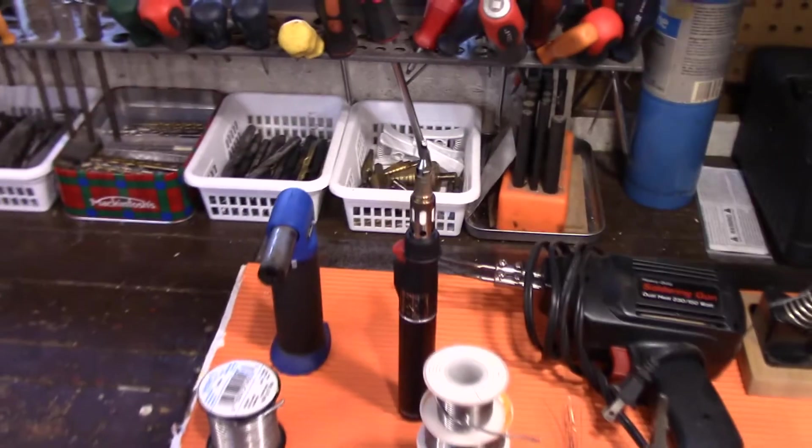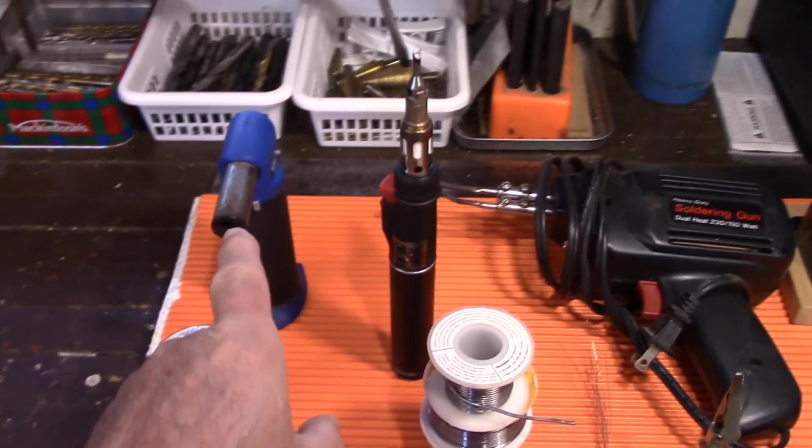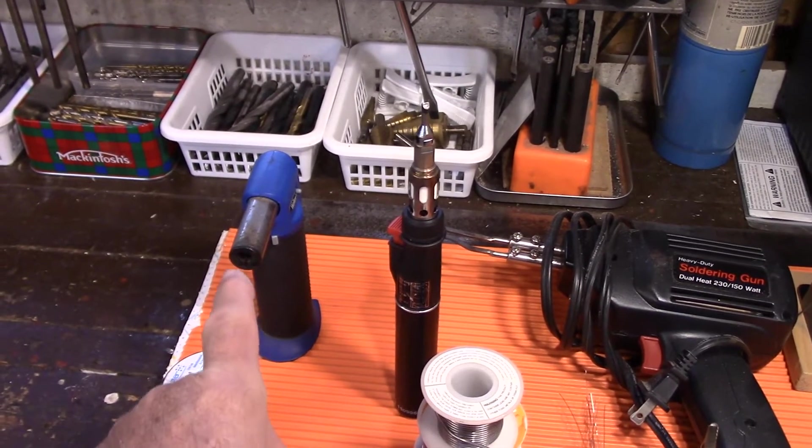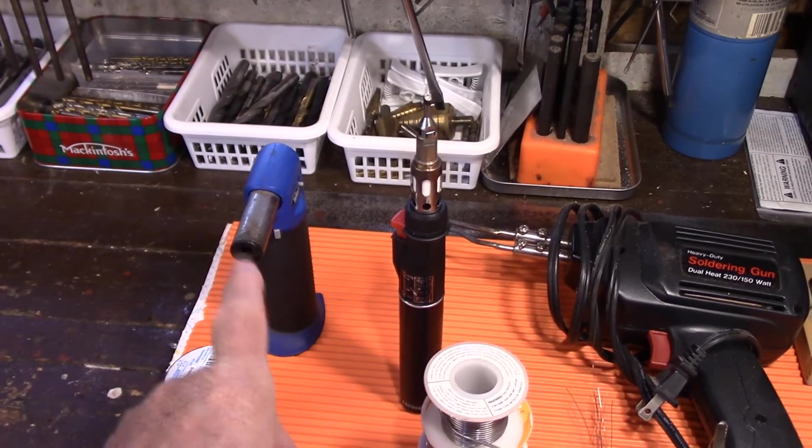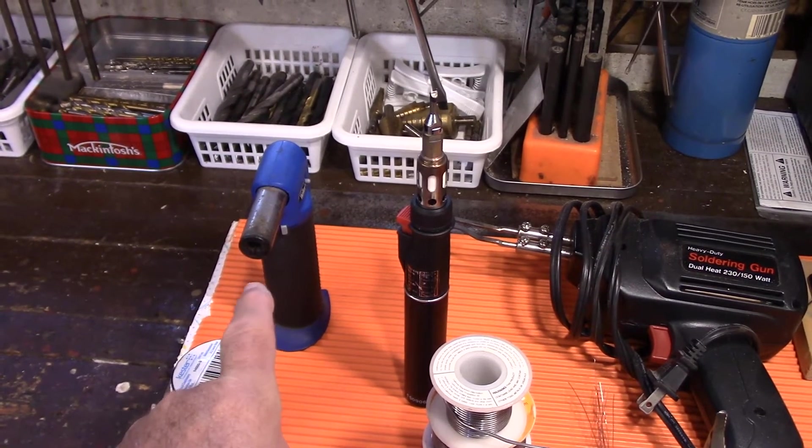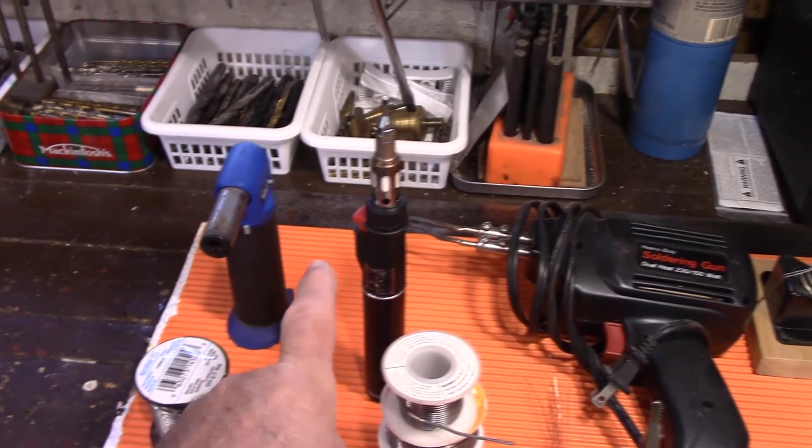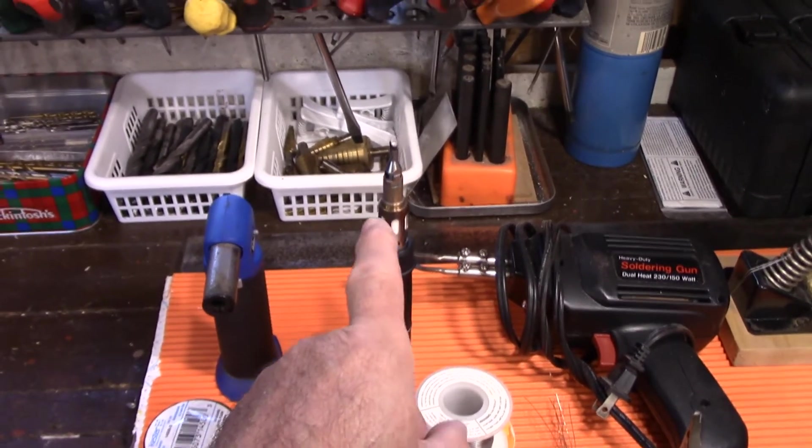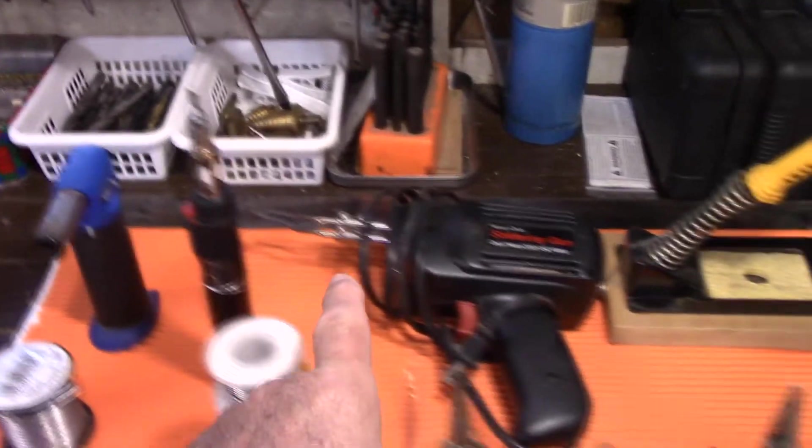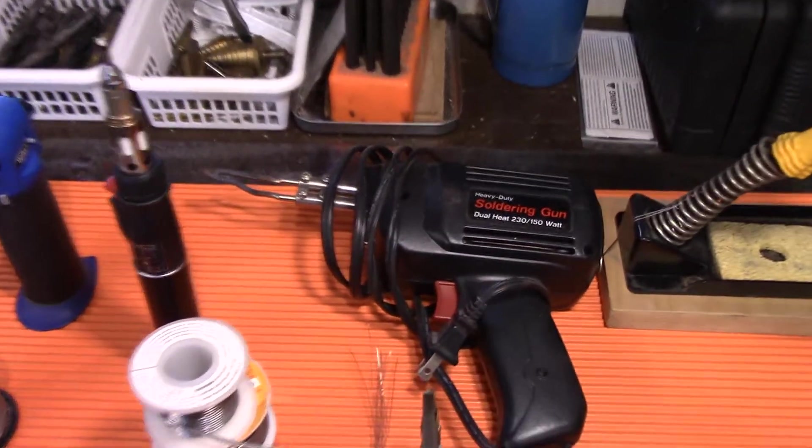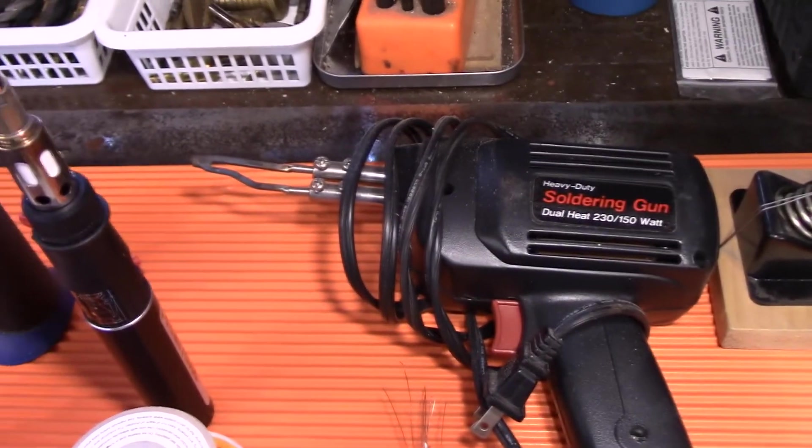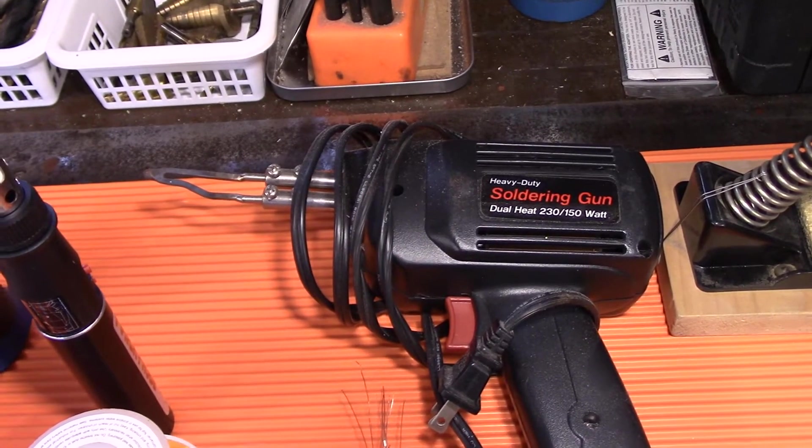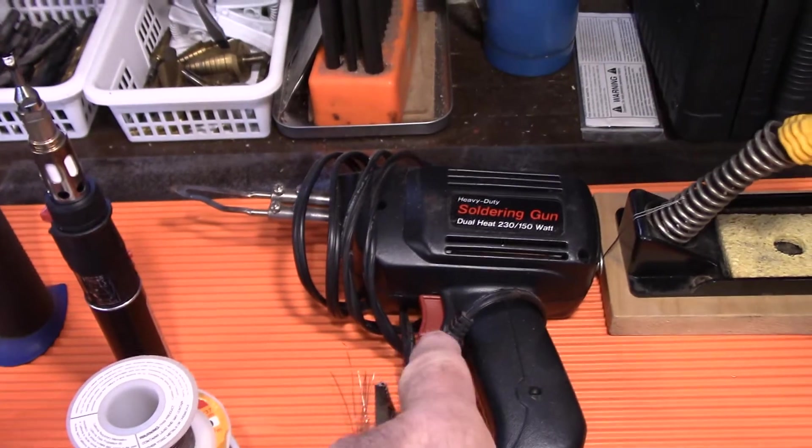And so what do I use for soldering? Well, this is butane and that there is for huge big jobs when you're soldering say a connector on the end of a huge battery cable. This one here is a nice butane soldering torch for when you don't have electricity. This one here is pretty heavy duty and it's electric and it says 230 and 150 watts, so it's got a two-stage trigger on it.